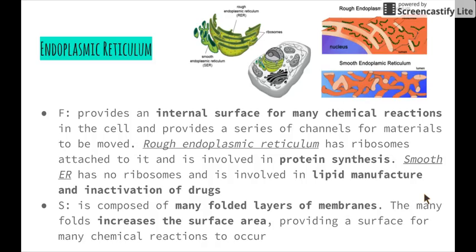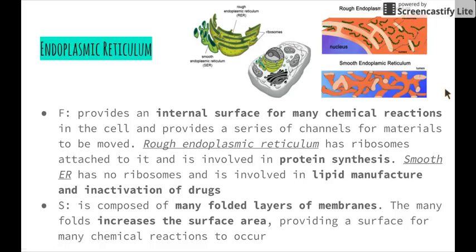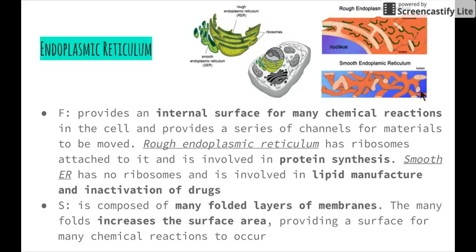Next, we have the endoplasmic reticulum. There are two types: rough endoplasmic reticulum and smooth endoplasmic reticulum. As a whole, the endoplasmic reticulum provides an internal surface for many chemical reactions in the cell and a series of channels for materials to be moved around. The rough ER has tiny spots on its surface known as ribosomes, which carry out protein synthesis. The smooth endoplasmic reticulum has no ribosomes and is involved in lipid manufacture — the production of fats and oils — and the inactivation of drugs. Its many folded membranes increase the surface area, providing a surface for many reactions to take place simultaneously.